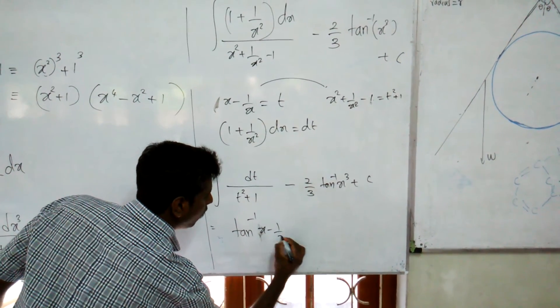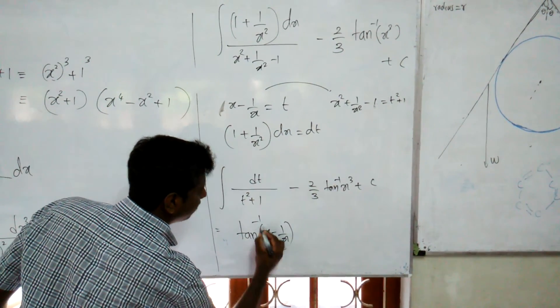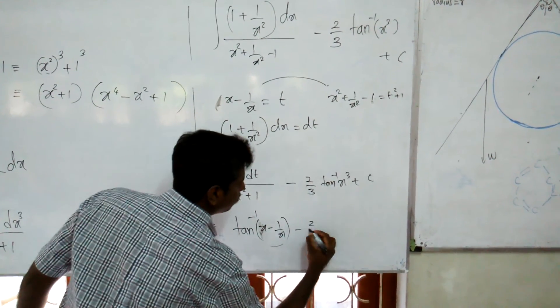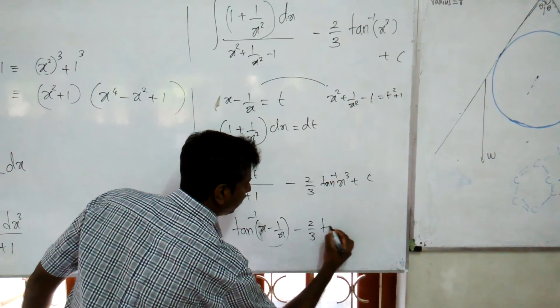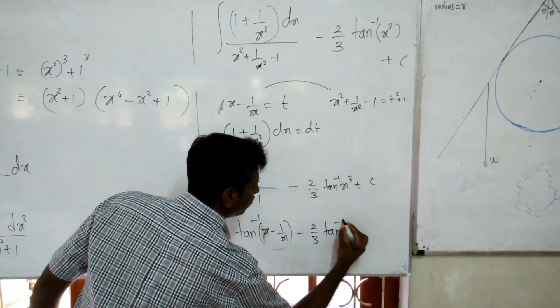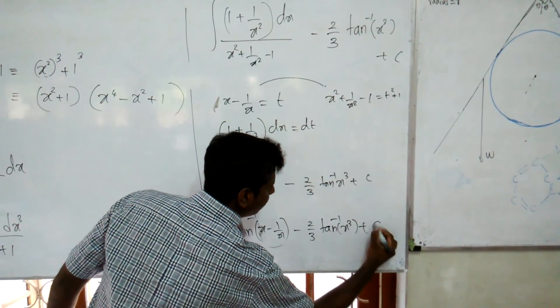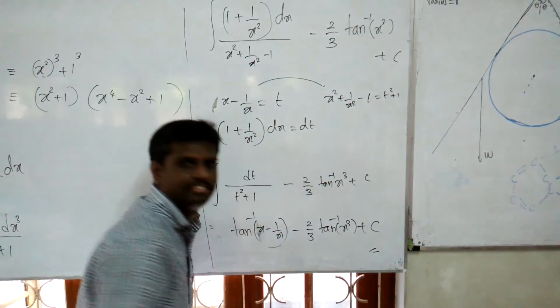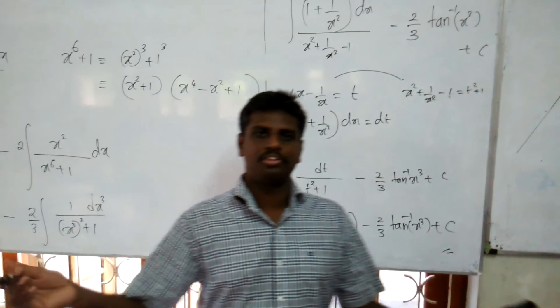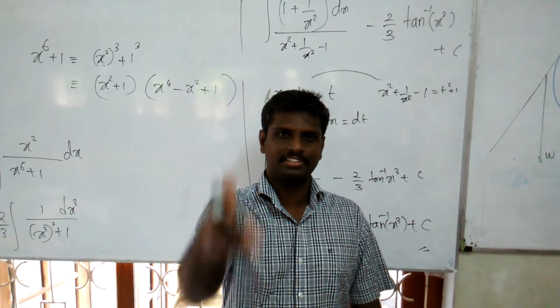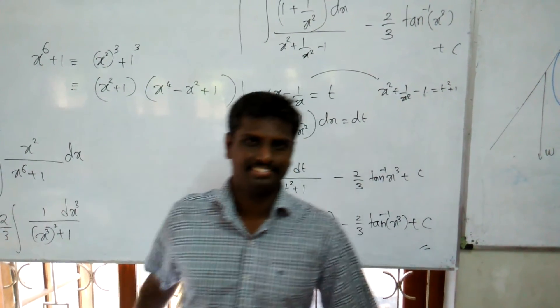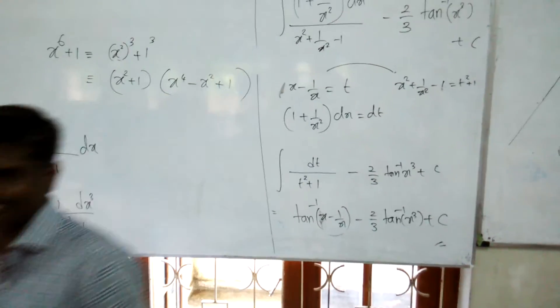So the final answer is tan inverse of (x minus 1/x) minus 2/3 tan inverse(x³) plus c. That is the answer for this 2015 Royal College question.